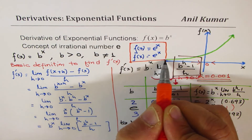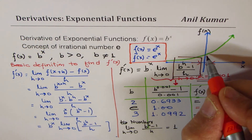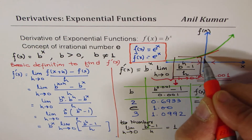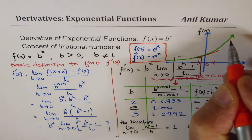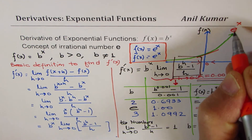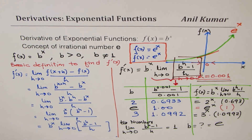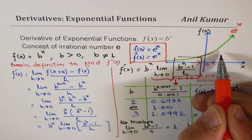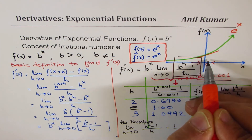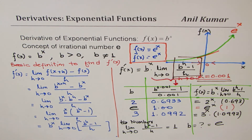This gives us a particular idea: the slope of the tangent at any point for e to the power of x will be the same as the value of the function at that point. So at x equals 0, the slope is going to be 1.